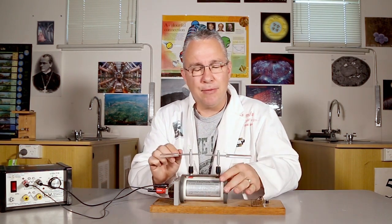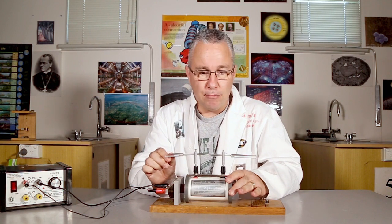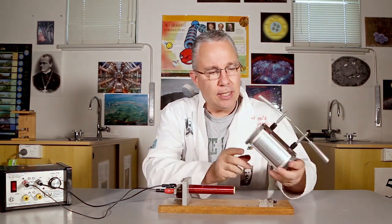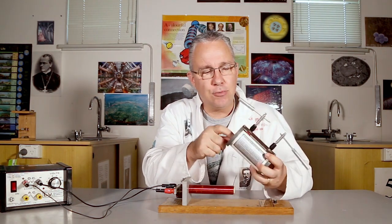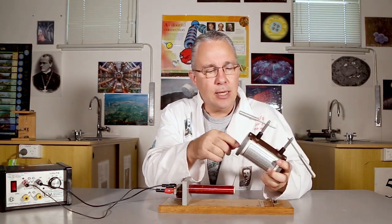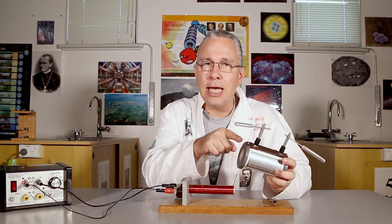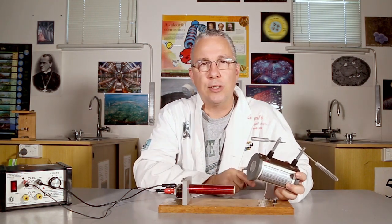In essence, the induction coil is really made up of two coils. We have an inner coil here and an outer coil. Now, the outer coil is not obvious in terms of the number of windings around this, but it is important to understand that there is a significantly larger number of windings in this coil than this coil.